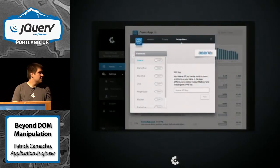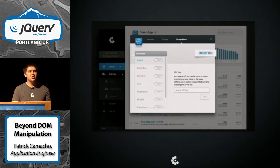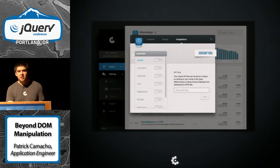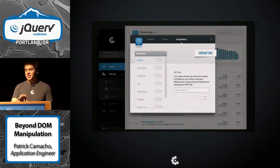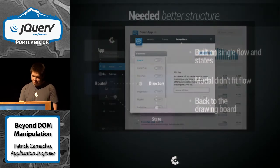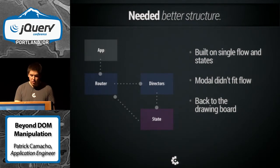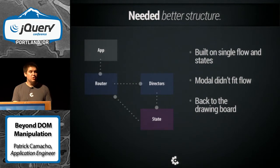When we look at this modal — a settings modal, very straightforward — the first thing I want to point out is that this settings modal actually has states itself. You see at the top we have some tabs. So now we have the exact same type of functionality in our application: being able to identify different states, but now in this isolated modal sitting on top of the application. No longer was everything being defined by a specific URL. The single flow didn't work, and the model didn't fit.